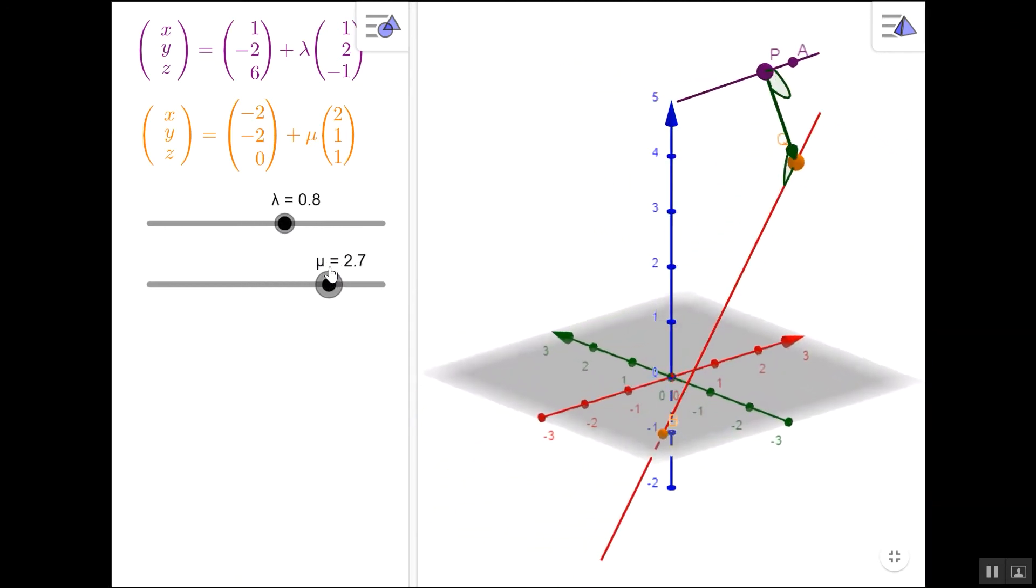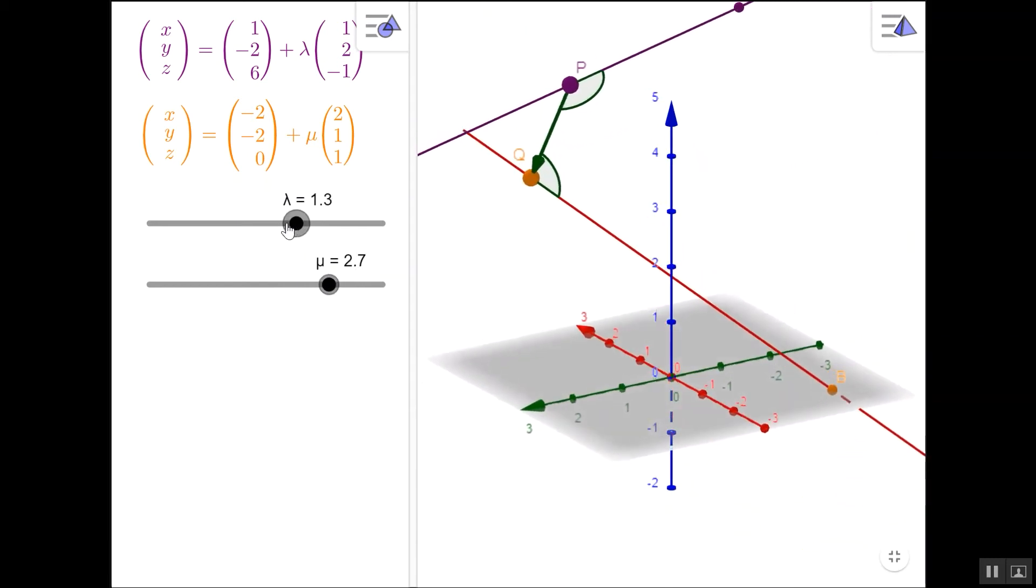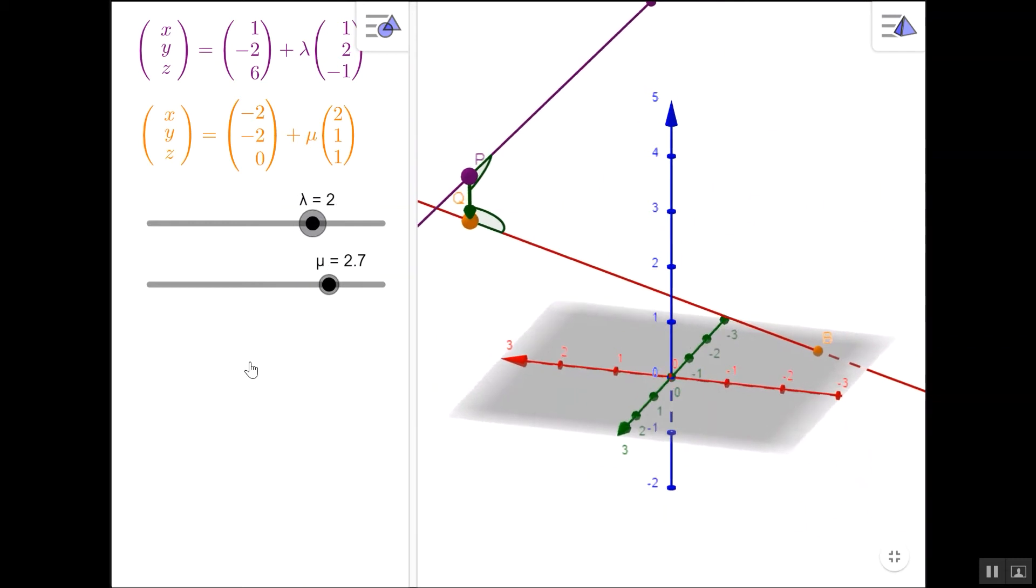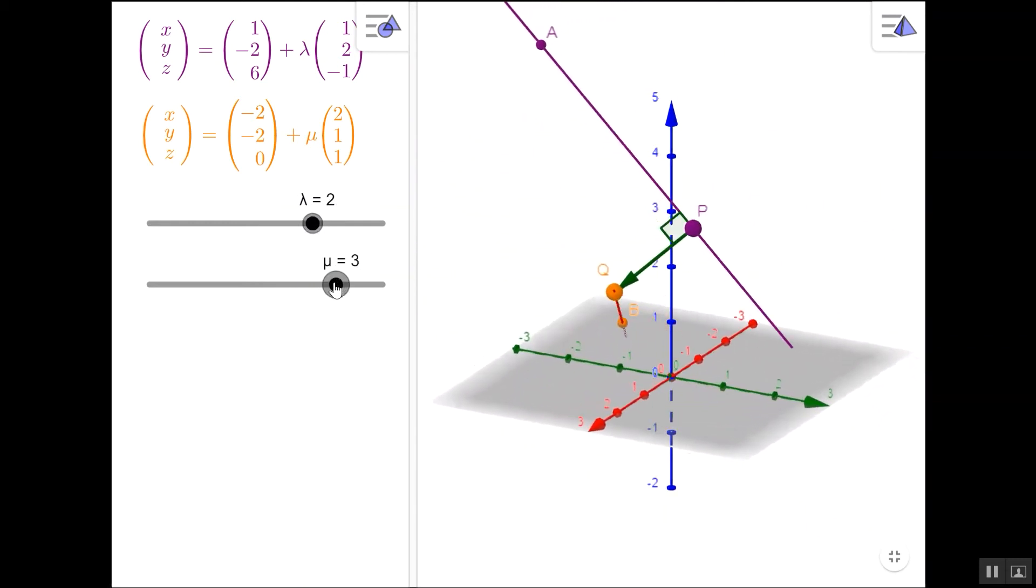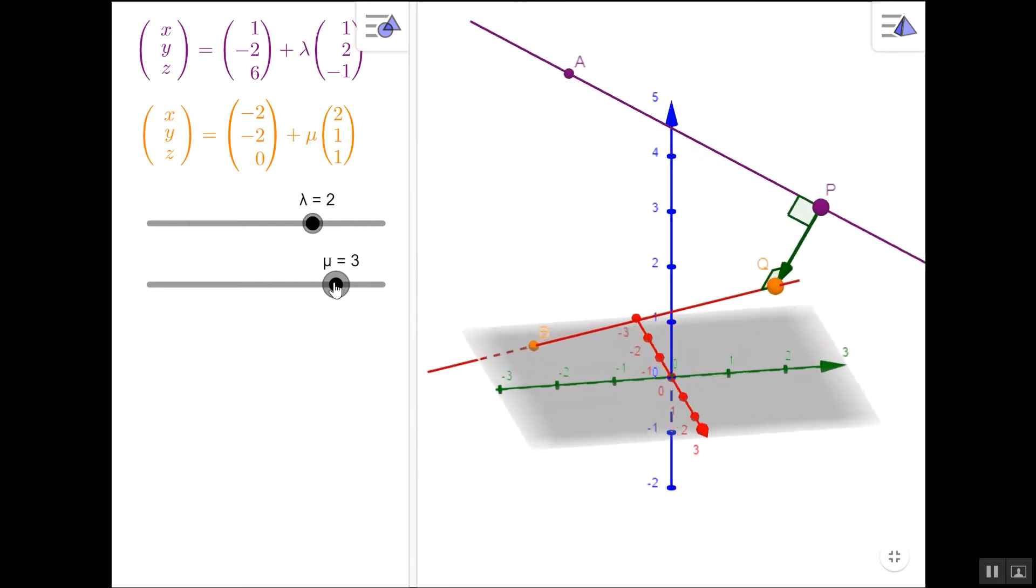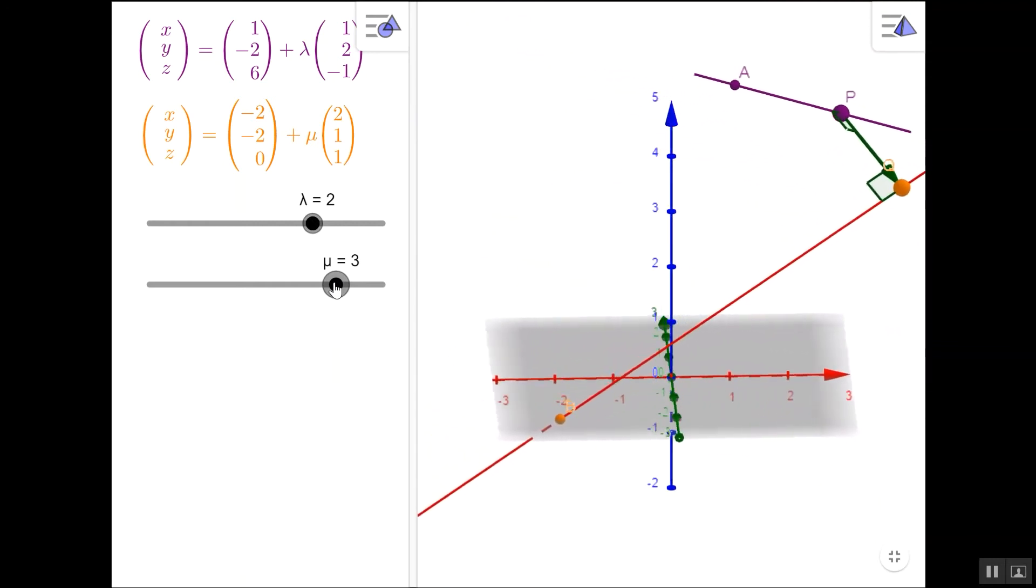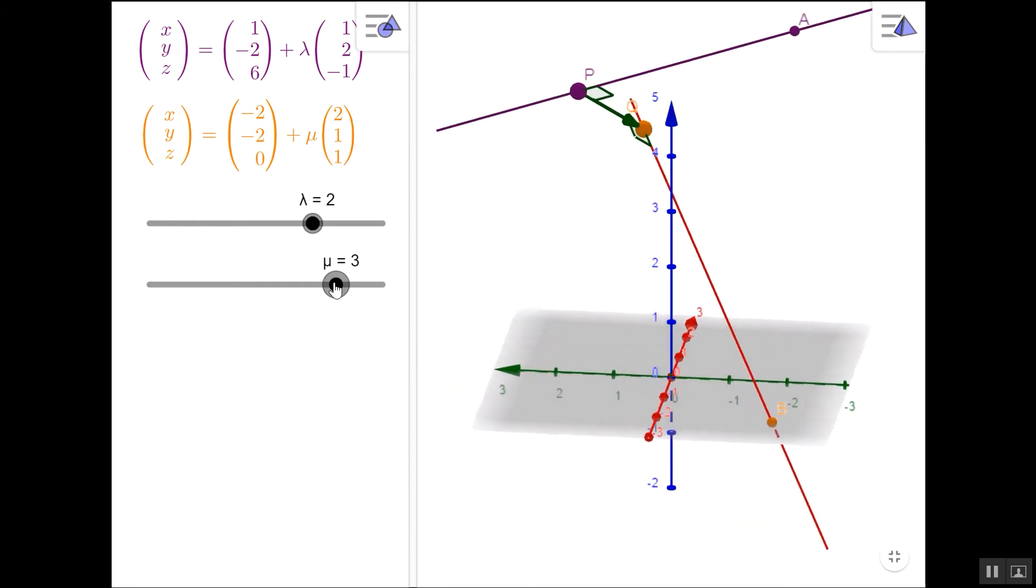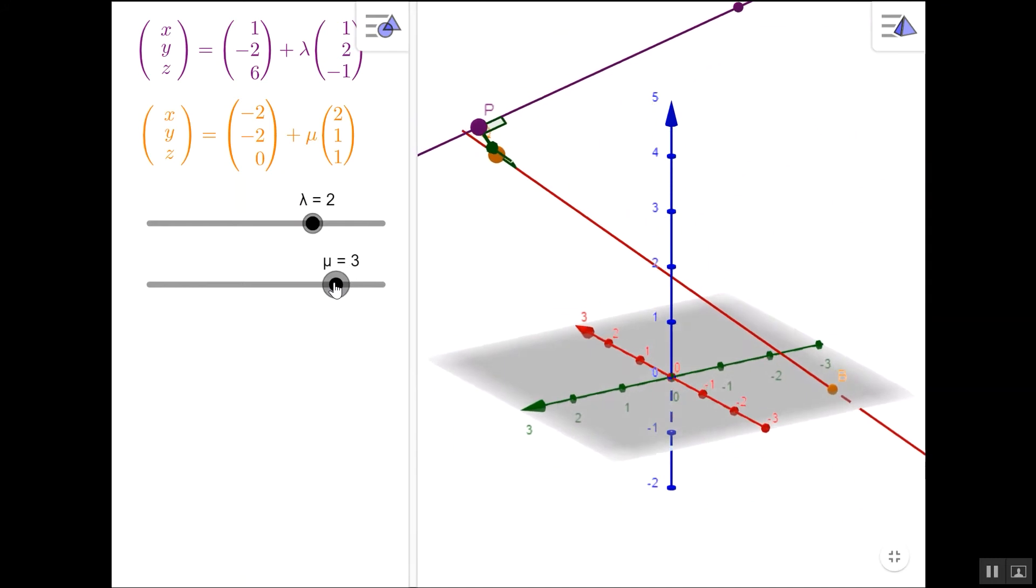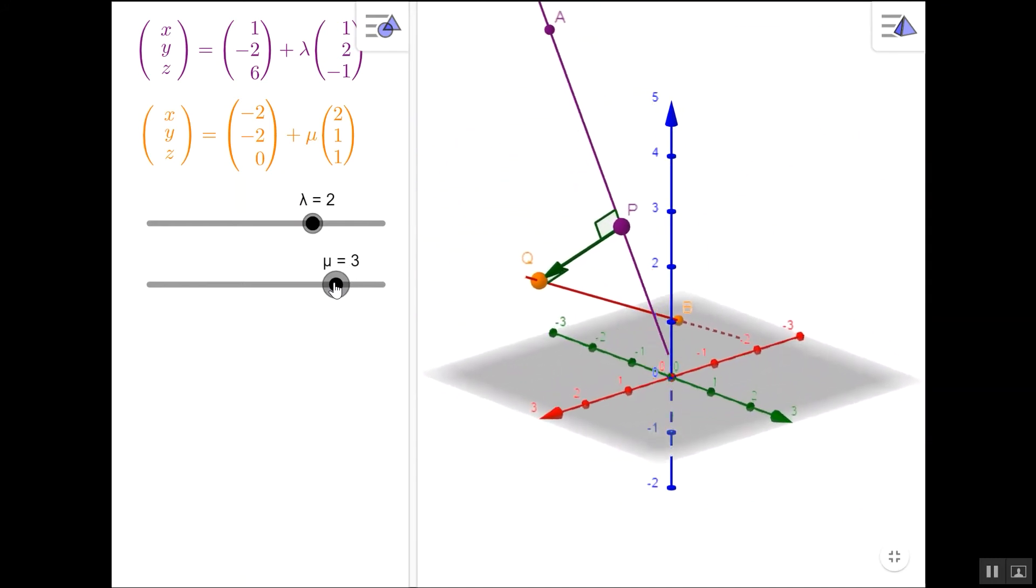Now you can see I can move my points along the line by changing Lambda and Mu. And I'm wanting to find where those lines are nearest to each other. Well, I happen to know that if I move Lambda to 2 and Mu to 3, I get a vector PQ that's perpendicular to both the purple and the orange lines. Therefore, if I worked out the length of PQ, that's the shortest distance between the lines.